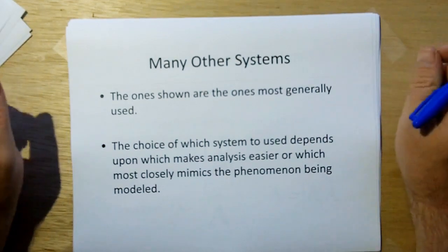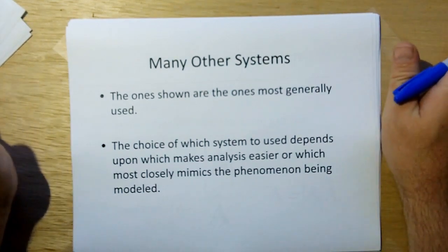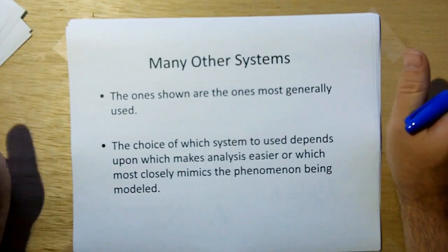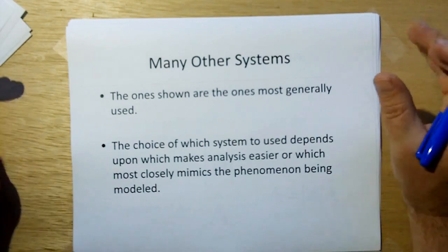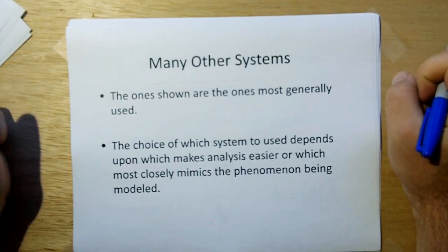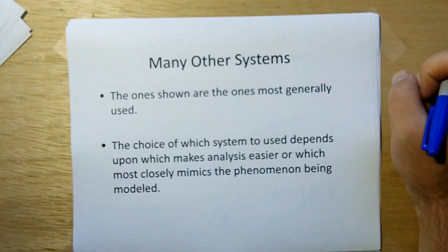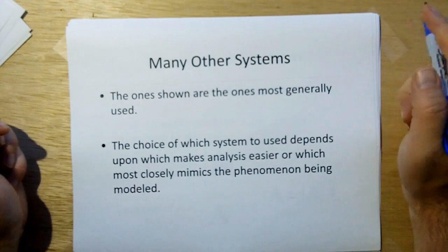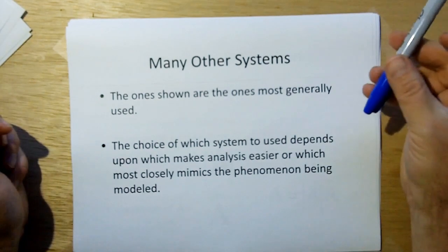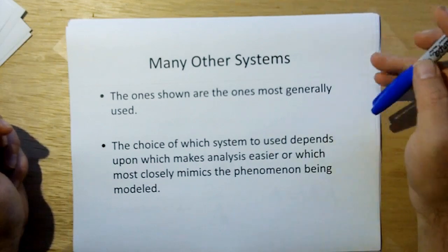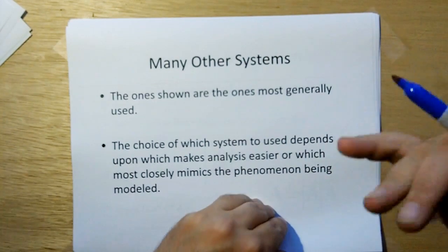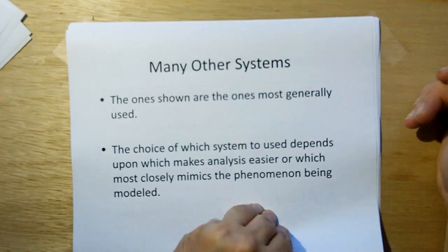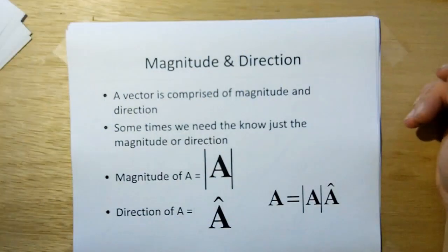There are many other coordinate systems out there. The ones I just showed you are the most generally used. The choice of which system to use depends on what makes analysis easier or which more closely mimics the phenomenon being modeled. For example, if you're pointing a telescope, you're definitely going to want to use spherical coordinates — that's a lot easier to visualize than trying to use Cartesian coordinates to point your telescope.